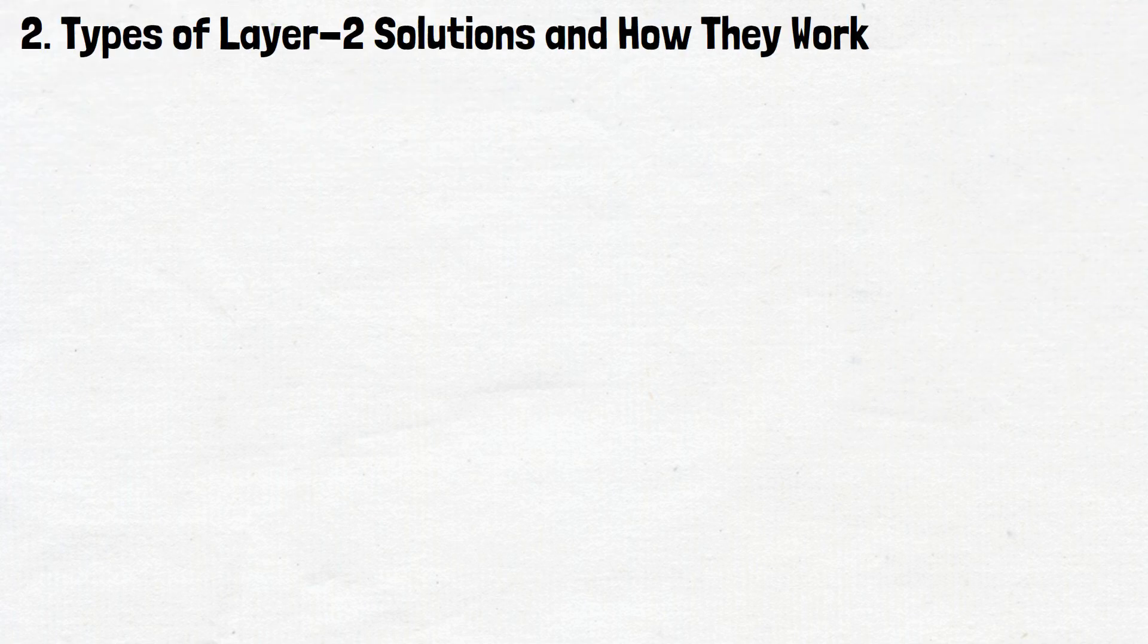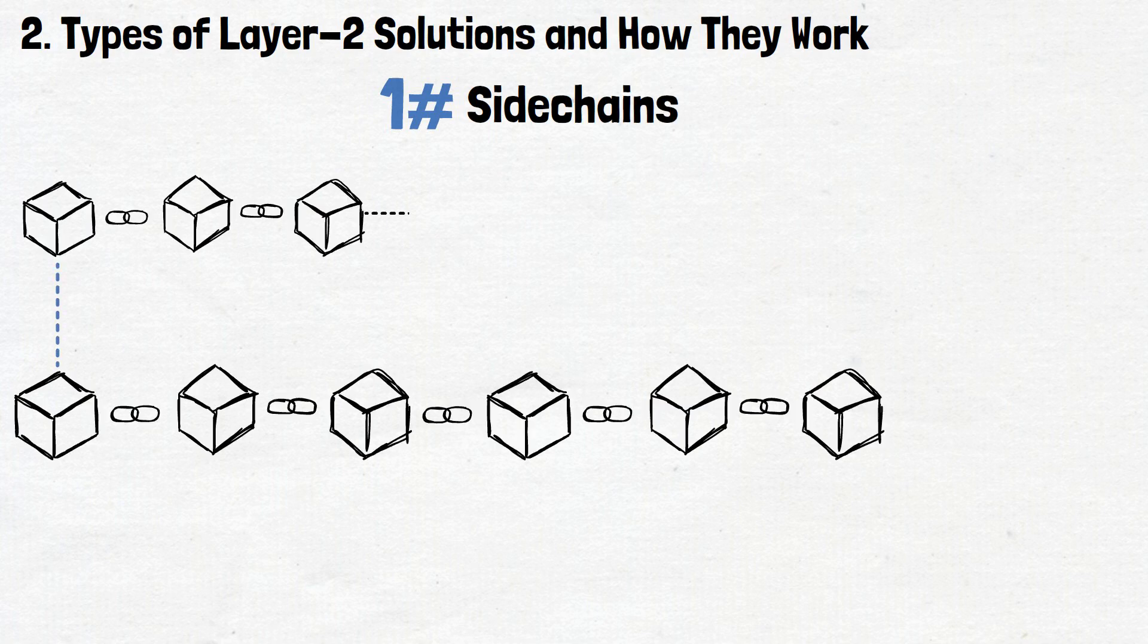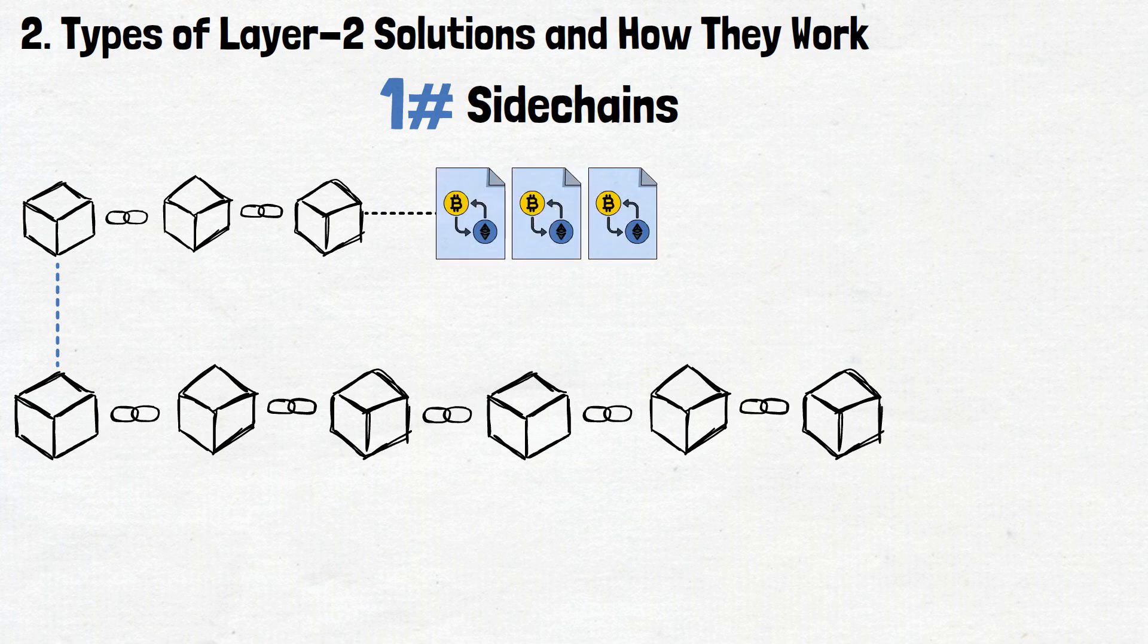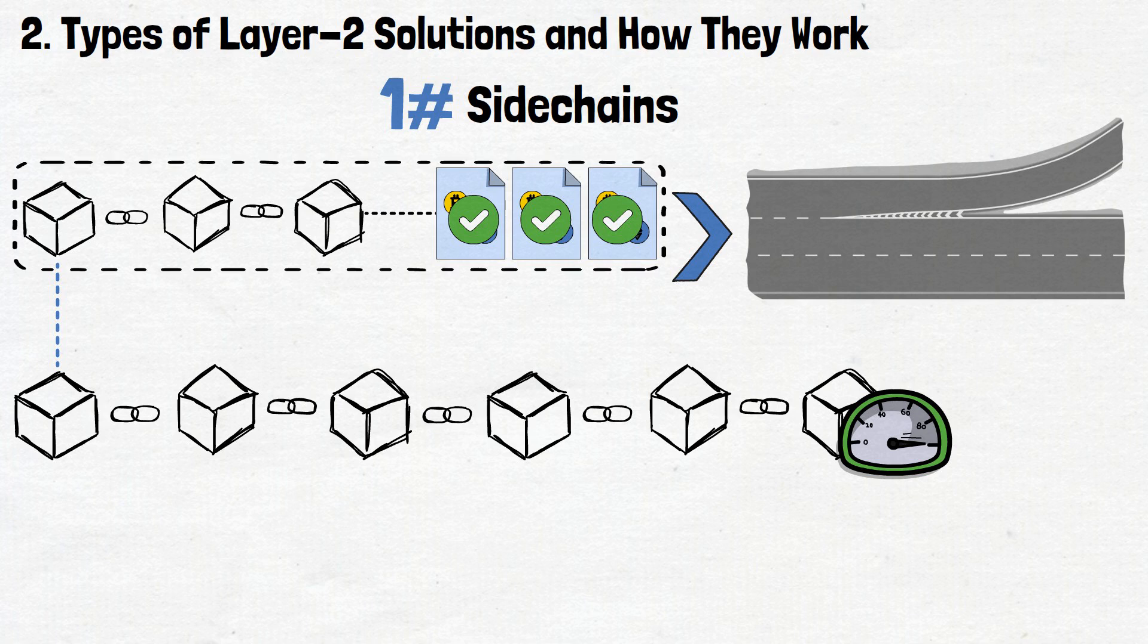Now, let's embark on a journey to unravel Layer 2 types and how they actually work. First in our lineup are sidechains. These are parallel chains made alongside the main blockchain, providing an avenue for certain transactions to occur independently. Think of them as specialized roads branching off the main highway. They handle transactions separately, relieving the congestion on Layer 1. Sidechain transactions are settled within their network, and later anchored back onto the primary chain, ensuring data integrity and security.